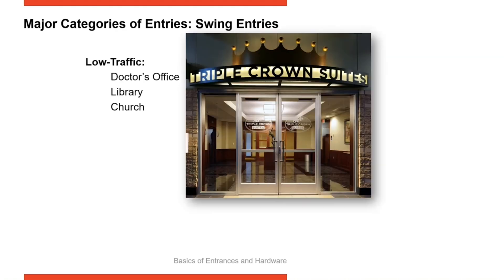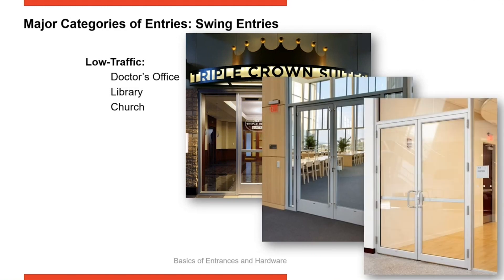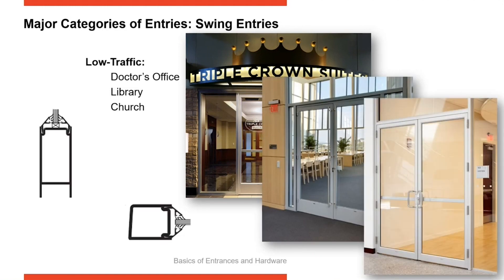When working with architects and helping them select the correct entrance for an application, we want to start by talking about traffic flow. We divide traffic flow into low, medium, and high. Low traffic flow includes places like a library, a church, or a doctor's office — applications where you're not open all day long, not open every day of the week. Traffic flow is lighter and slower; people are not in a rush. It's a very easy, steady flow with limited hours of operation.